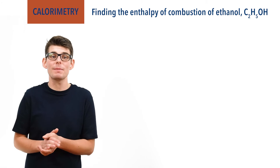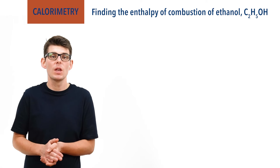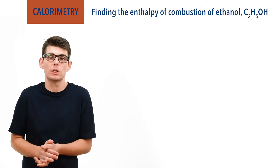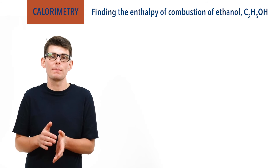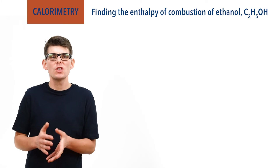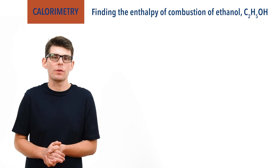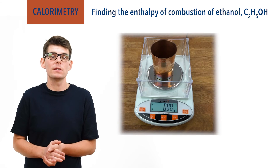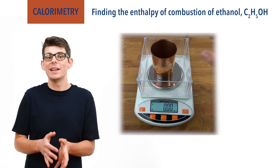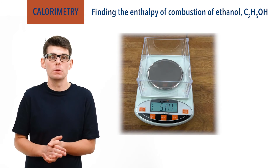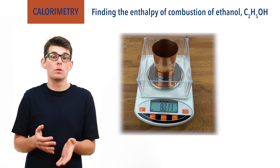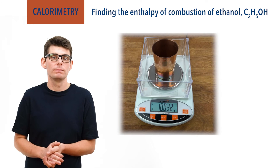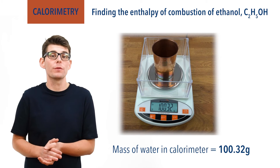We need to know the exact mass of water that will be heated. You can just use a given volume of water — for example 100 cm³ — and assume this to be 100 grams, as the density of water is 1 gram per cm³. To make things more accurate, we will zero a balance with the empty calorimeter, then add approximately 100 cm³ of water and record the new mass, giving us the exact amount of water that will be heated — in this case 100.32 grams.